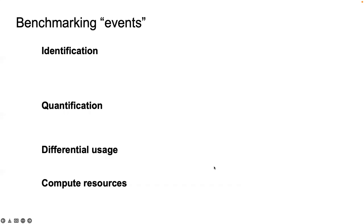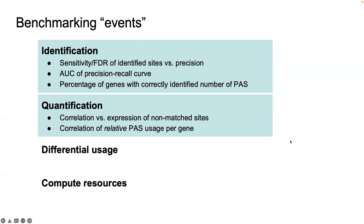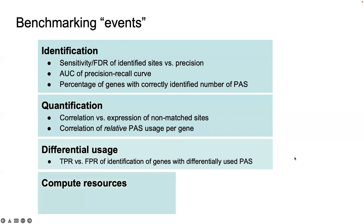So what are we actually evaluating? For APAVal, we've focused on four overall benchmarking tasks, or events. The first is identification: how well is a tool simply identifying that a poly-A site exists from RNA-seq data compared to orthogonal data? Next, how well is a tool quantifying alternative polyadenylation within a single condition, including absolute and relative usage between poly-A sites within the same gene? Third, differential usage between different conditions. And finally, we assessed different compute resources, including maximum memory consumption and CPU hours.